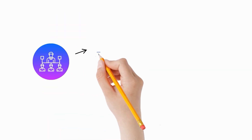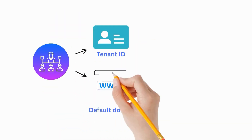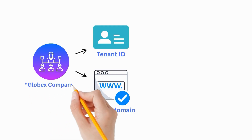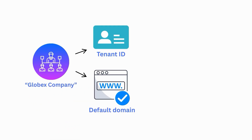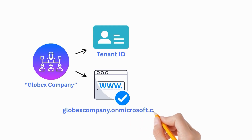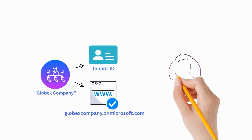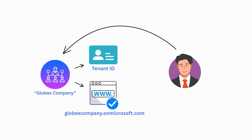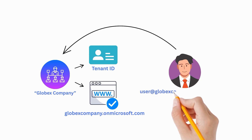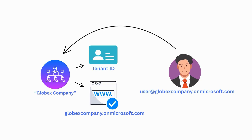When you create a tenant, it comes with a default domain. For example, if your tenant is named Globex Company, the default domain will be globexcompany.onmicrosoft.com. Any users you add to the tenant at this stage will automatically have a login email address in this format, such as user@globexcompany.onmicrosoft.com. Later, you can customize it and set up a unique domain for your organization, such as john@globex.com.